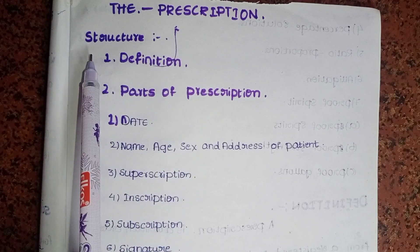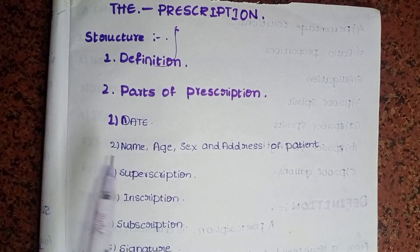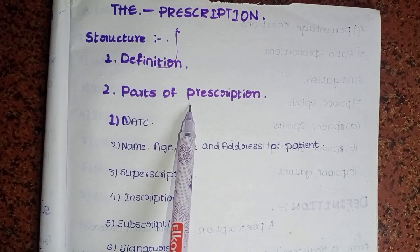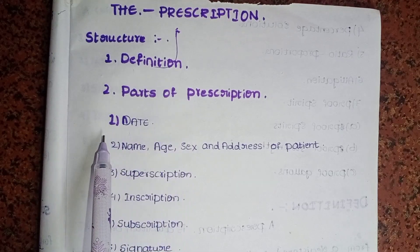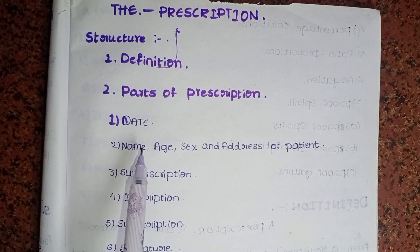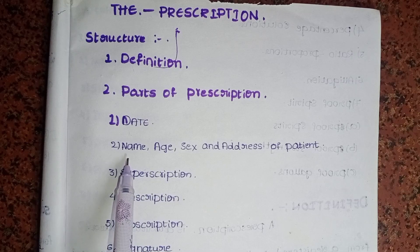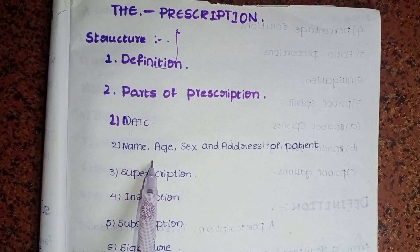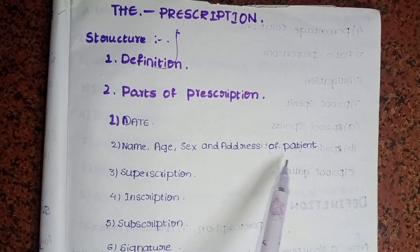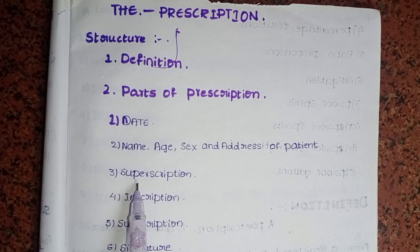Prescription has a structure. First, the definition. Next, parts of prescription — what are the parts: date, when we have the appointment to the doctor; name, who is the patient — their name, age, sex, and address of the patient. And next, superscription, inscription, subscription, and signature.